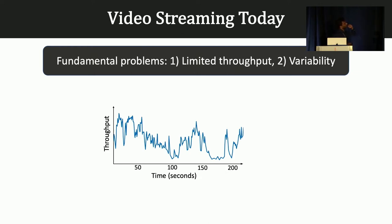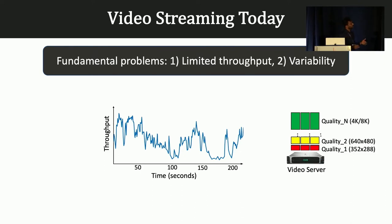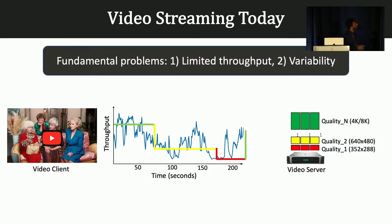Let's start by looking at some of the problems that video streaming is facing today. In the networking community, we have two major problems: one is the limited throughput, and the second is the variability or fluctuations in throughput. As you can see in this example trace, on the y-axis we have throughput, and on the x-axis a time scale in seconds — there is quite a bit of variance. To deal with this, people traditionally use adaptive video streaming, where a video server encodes a video into multiple renditions of different qualities requiring different levels of throughput. On the client side, adaptive bit rate algorithms estimate throughput and stream a suitable video bit rate based on estimated network capacity.